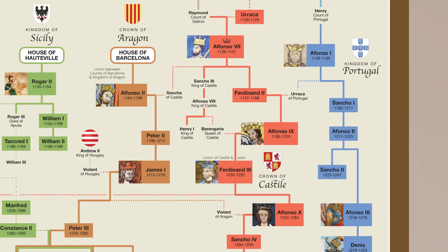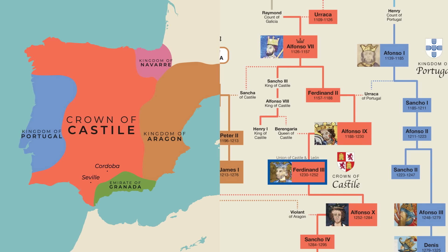Back to Ferdinand III: during his reign, the Almohad Caliphate fell apart and had to withdraw from Spain, leaving their territory at the mercy of the Christian kingdoms and local Muslim lords. Castile expanded into southern Spain, taking Cordoba in 1236 and Seville in 1248, ending more than five centuries of Muslim rule in the region. Once again, the Muslim powers in the region splintered and only one managed to hold on — Granada.